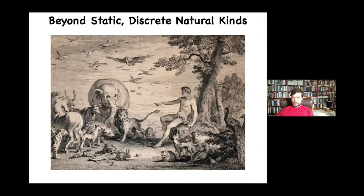This is a picture that is very old — a classic painting. Adam is naming the animals in the Garden of Eden. And although this is kind of a pre-scientific worldview, I think in many ways it still shapes a lot of discussion, both in science and philosophy, because it really emphasizes this idea of discrete natural kinds.